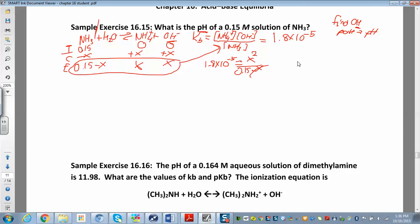If I ignore that X, my life gets a lot easier. I can just say, I have 1.8 times 10 to the negative 5 times, I'm going to bring this over here, multiply over there, 0.15 is equal to X squared. Then take the square root of both sides to solve for X. X is equal to 0.00164. That's equal to our hydroxide concentration. I'm carrying out one extra sig fig there. And that's equal to our hydroxide ion concentration.